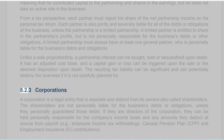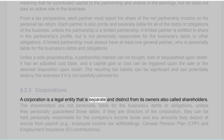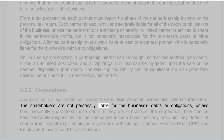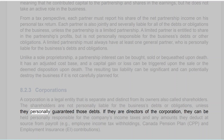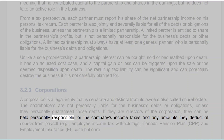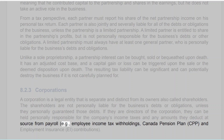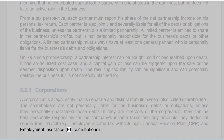8.2.3 Corporations. A corporation is a legal entity that is separate and distinct from its owners, also called shareholders. The shareholders are not personally liable for the business's debts or obligations, unless they personally guaranteed those debts. If they are directors of the corporation, they can be held personally responsible for the company's income taxes and any amounts they deduct at source from payroll, e.g., employee income tax withholdings, Canada Pension Plan (CPP), and Employment Insurance (EI) contributions.